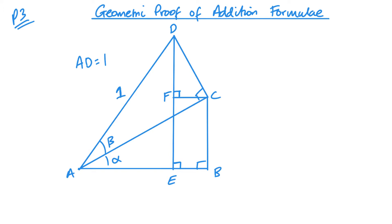Now, we know that this angle here is 90 minus alpha, which then, if I look at this small angle here — because that's 90 degrees — this small angle is going to be alpha, which means that this one's 90 minus alpha, which means that this angle here is alpha. So I can say that angle FDC is equal to alpha.